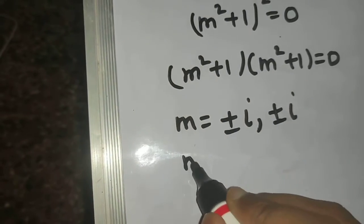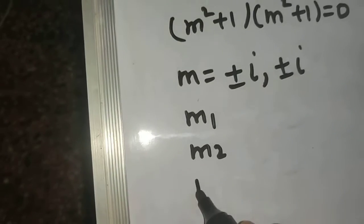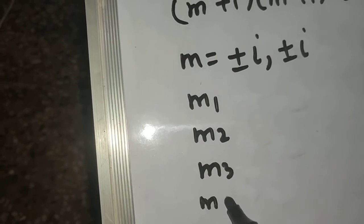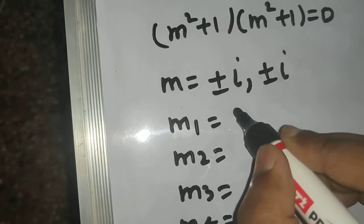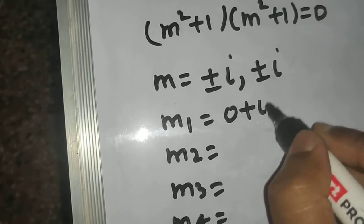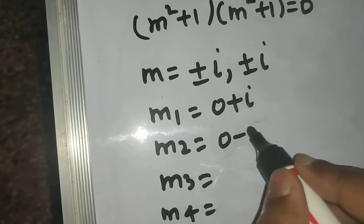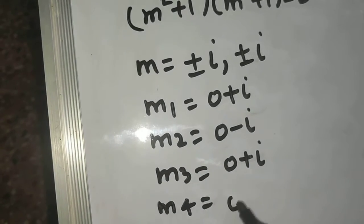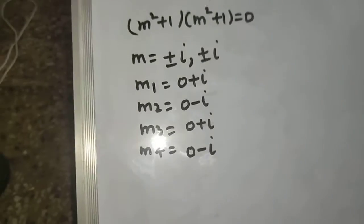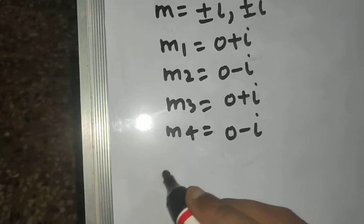If I were to write this in a better way I will write this something like this for your better understanding. First root is 0 plus iota. Second root is 0 minus iota. Third root is again 0 plus iota and fourth root is 0 minus iota.